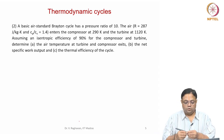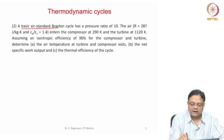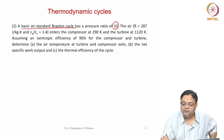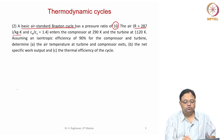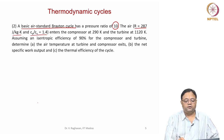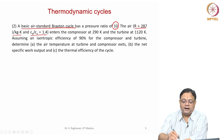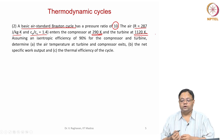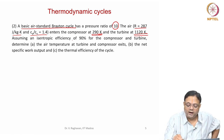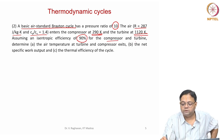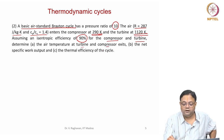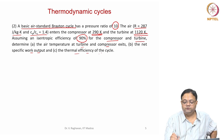Second problem: a basic air standard Brayton cycle has a pressure ratio of 10. The gas constant for air is 287 joule per kg Kelvin and the specific heat ratio gamma is 1.4. Air enters the compressor at 290 Kelvin and enters the turbine at 1120 Kelvin. Assuming isentropic efficiency of 90 percent for both compressor and turbine, determine the air temperature at the exits of turbine and compressor, net specific work output, and thermal efficiency of the cycle.